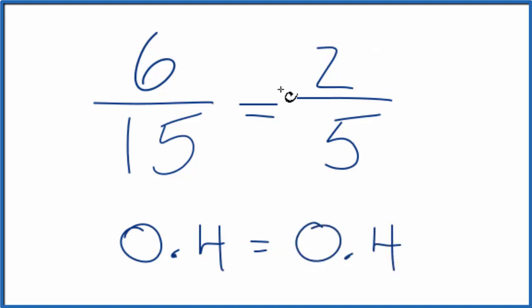They have the same value. We've just written the denominators and numerators differently. We simplified 6/15 down to 2/5 by finding the common factor, which was 3.